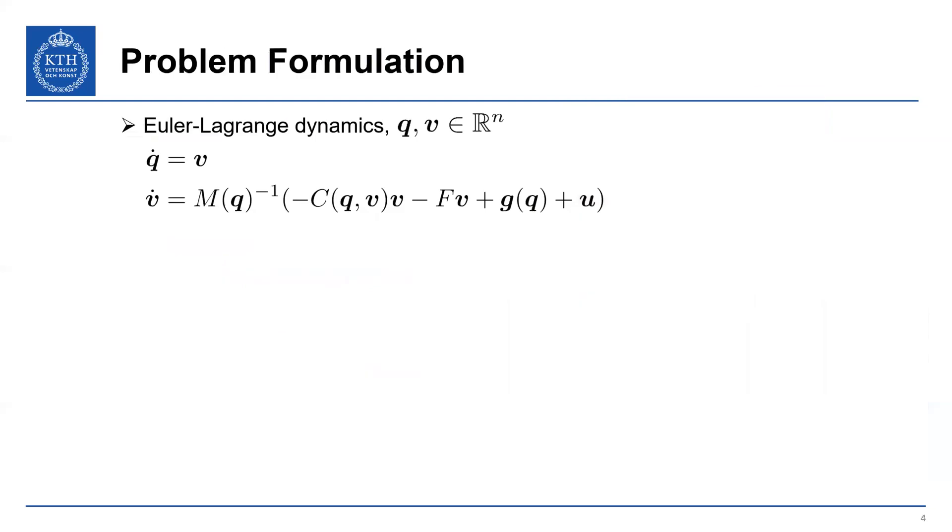So to get into the problem formulation, we have our conventional Euler-Lagrange dynamics. We have the generalized position coordinates Q, generalized velocities V. We have the acceleration of the system that's dependent on the inertia matrix M, Coriolis matrix C. This F is the damping matrix. We have a gravity torque G. And finally, our control input here, which are the torques that we can apply on the system.